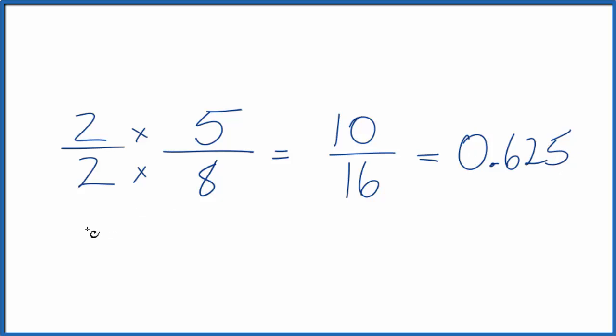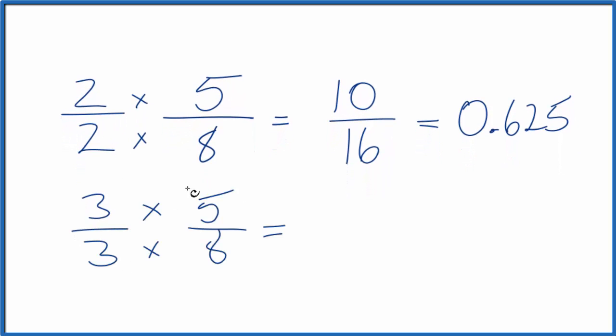Let's try another one. How about 3 over 3? So again, 3 divided by 3 is 1. We're not changing the value.